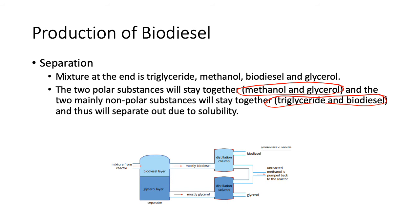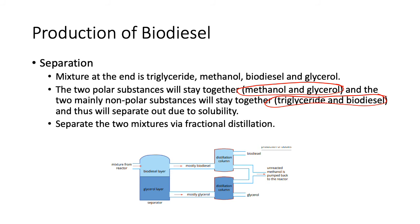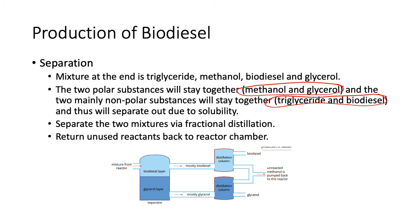You let the mixture sit and the two layers separate. In the reactor chamber they don't separate because the mixture is continuously stirred. The mostly glycerol layer and the mostly biodiesel layer are then put into distillation columns and separated via fractional distillation by different boiling points. You end up with glycerol, biodiesel, and a little methanol and oil, which is pumped back into the reactor for reuse.